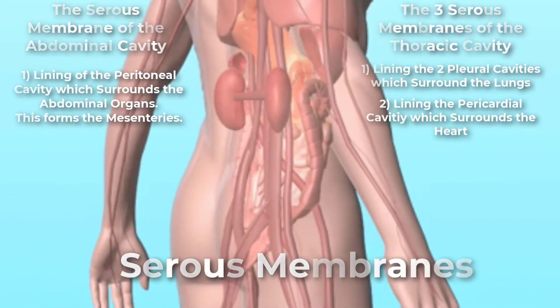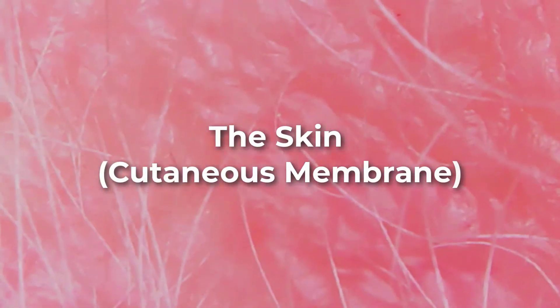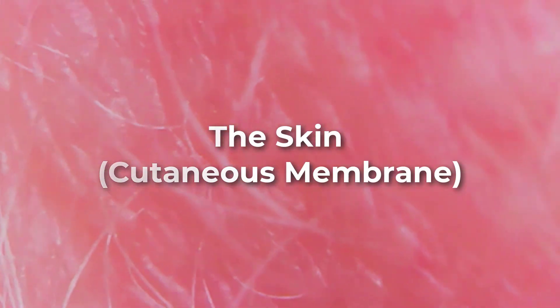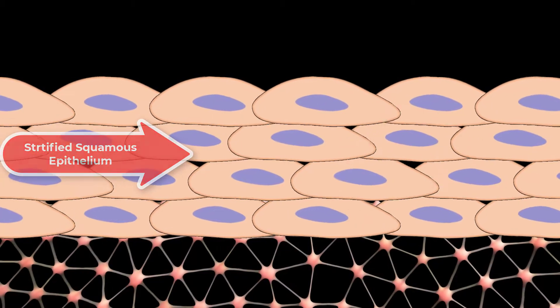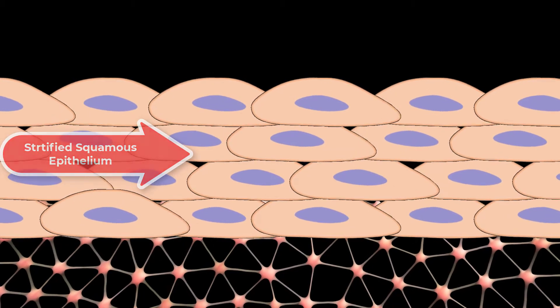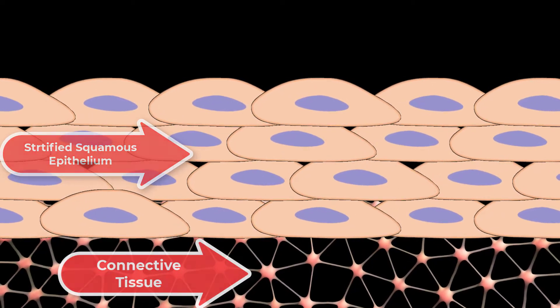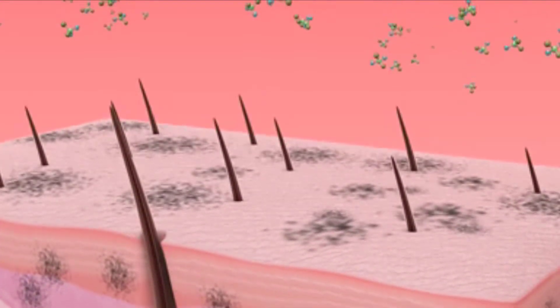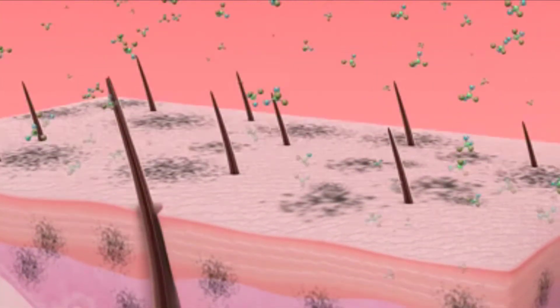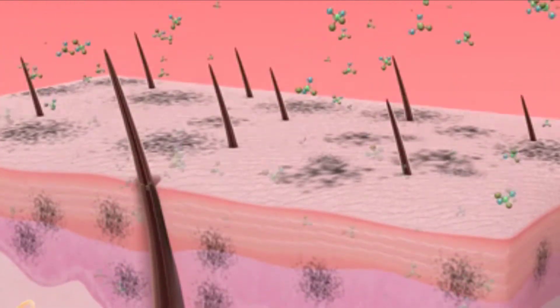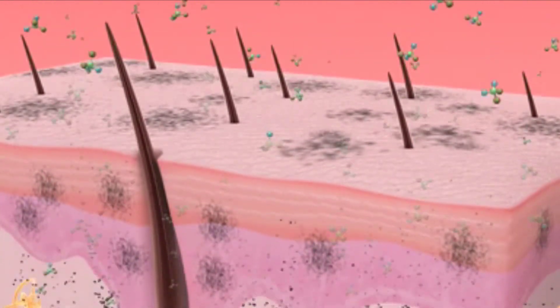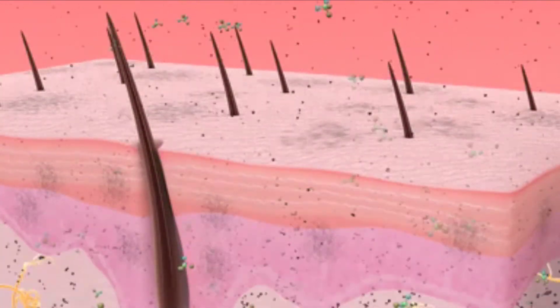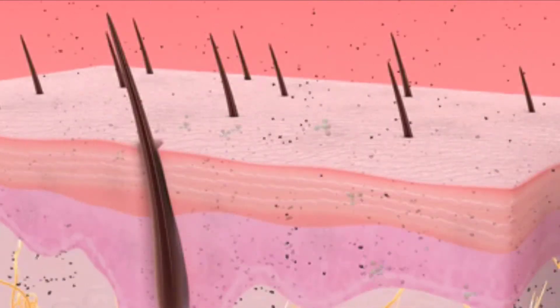The skin is an epithelial membrane, also called the cutaneous membrane. It is a stratified squamous epithelial membrane resting on top of connective tissue. The apical surface of this membrane is exposed to the external environment and is covered with dead, keratinized cells that help protect the body from desiccation and pathogens.